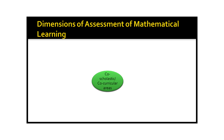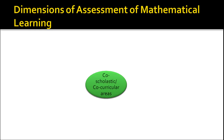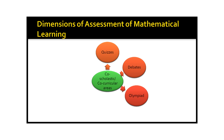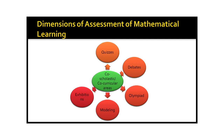Assessment has to be done not only through scholastic activities, but also through co-scholastic or co-curricular activities. The dimensions of co-scholastic activities for assessing mathematics learning include: quizzes, which interest students; debates on mathematics and its applications; Olympiad participation, wherein even the preparation itself makes them learn more than usual classroom activities; and modeling, where there can be exhibitions in which students prepare models of mathematical concepts, display them, and discuss with the audience the concepts they have demonstrated.